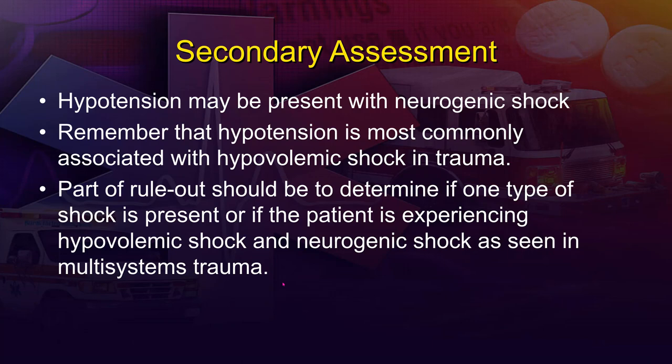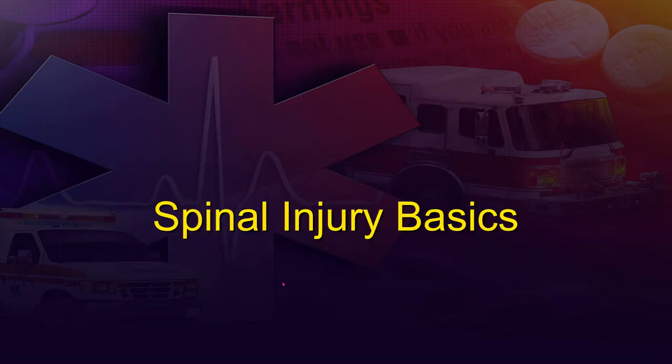Just as with brain injury, we must prevent secondary injuries. We want to limit hypovolemia, hypotension, and hypoxia in patients with isolated spinal cord injuries. If the patient is also in hypovolemic or neurogenic shock, or has multi-system trauma, maintaining adequate central nervous system perfusion becomes more challenging and we may need to address other risks like internal hemorrhage.